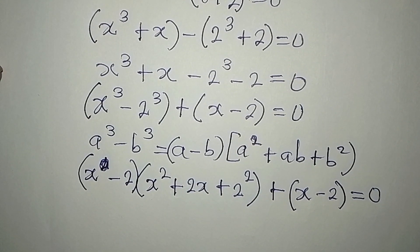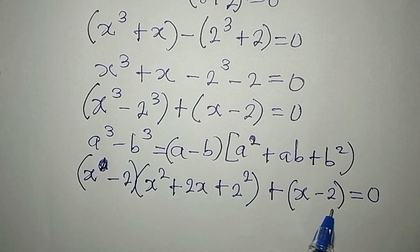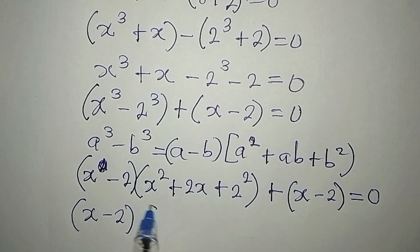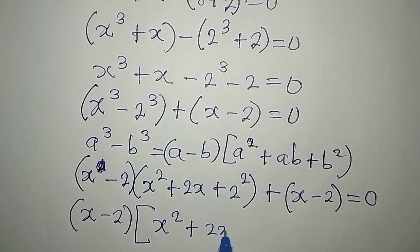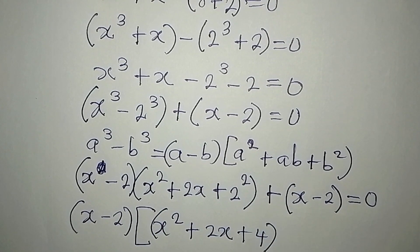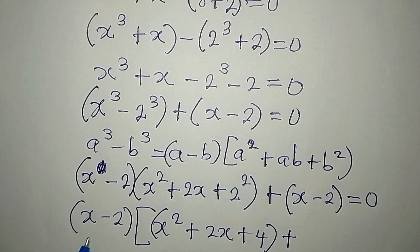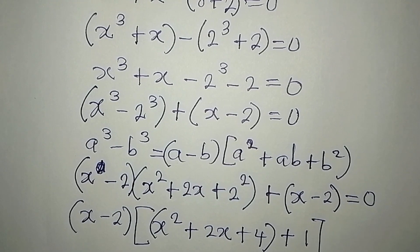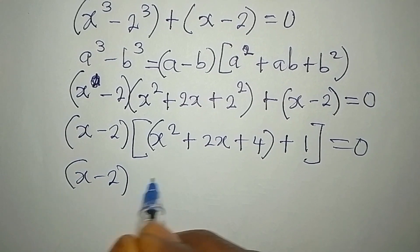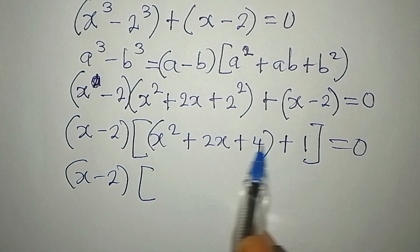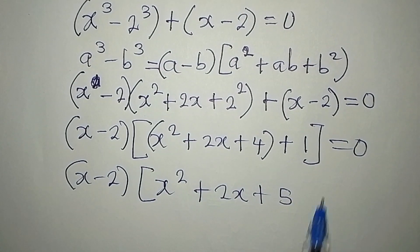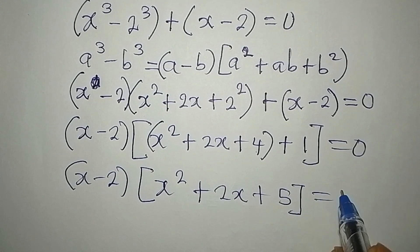Now we need to factorize. We have x minus 2 here and x minus 2 over there, so it comes out as a common factor. What remains is x squared plus 2x, and 2 squared is 4 — in brackets — plus x minus 2 divided by x minus 2, which gives 1. So we equate to zero. x minus 2 is still a common factor, and we can add those terms: x squared plus 2x plus 5 — because 4 plus 1 is 5 — close bracket, equals zero.